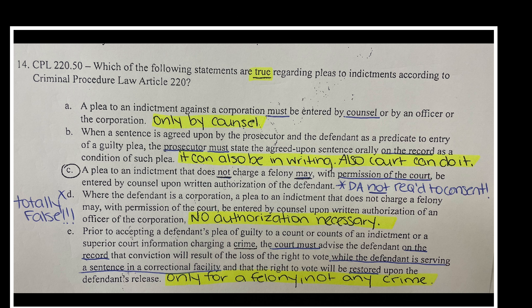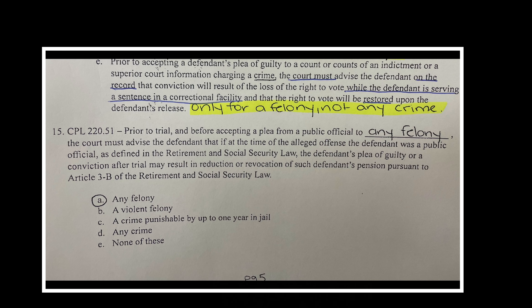There's no authorization necessary for counsel to enter a plea because defendants have to be represented by counsel. Prior to accepting a defendant's plea of guilty to a felony — only a felony — the court must advise the defendant on the record that conviction will result in the loss of the right to vote while serving, and that it will be restored upon release. Prior to trial and before accepting a plea from a public official to any felony, the court must advise the defendant that the plea of guilty may result in reduction or revocation of their pension pursuant to the Social Security law. Both of those advisements have to be stated on the record by the court when the plea is taken.